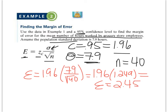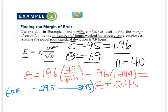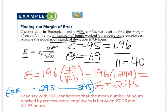So what do we do with that? I'm going to put my mean in the middle — my mean is 29.5. I'm going to add 2.45 to 29.5, kind of like we've done with the normal curve, and I get 31.95. Then I'm going to subtract 2.45 from 29.5 and get 27.05. So with 95% confidence, the mean number of hours worked by grocery store employees is between 27.05 and 31.95 hours. Now I have a range to represent the average hours I'm projecting for my population.